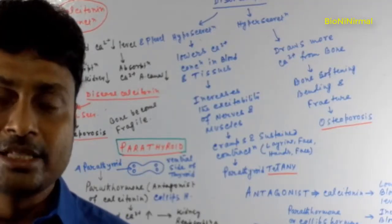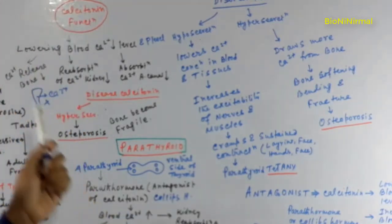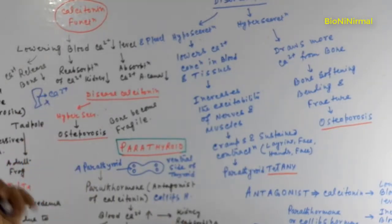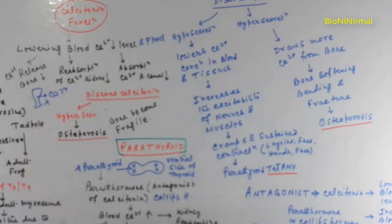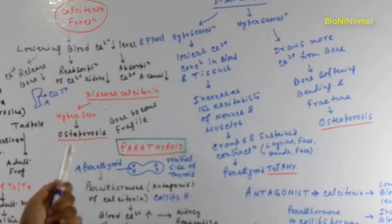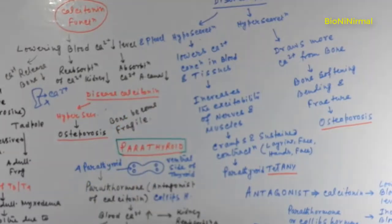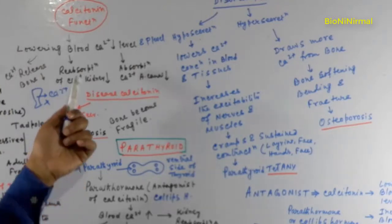The calcitonin hormone lowers the blood calcium level. It prevents the release of calcium from the bone, so that calcium levels do not rise in the blood. It also lowers the reabsorption of calcium from the kidney, so calcium is excreted through the urine. Additionally, calcitonin prevents the absorption of calcium from the alimentary canal, so the blood calcium level is lowered.